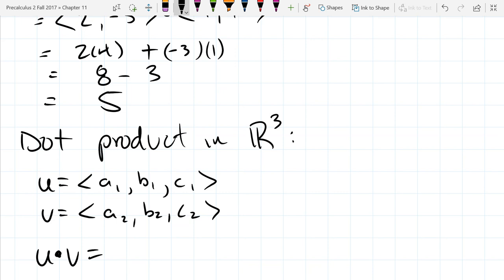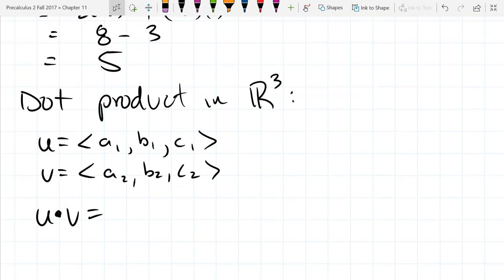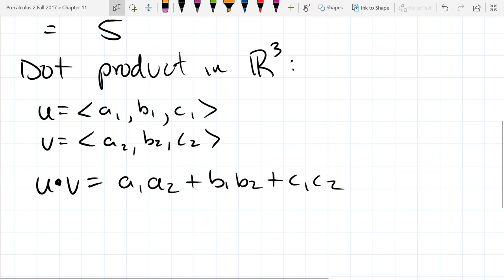And we dot them together, it's going to be exactly like it was before. You just get a1a2 plus b1b2 plus c1c2 at the end. So you're just multiplying coordinates together. So when you see what it looks like in three dimensions, you can probably imagine it in four dimensions. You just have to multiply the last two coordinates together and add them on. So dot product is easy to compute in any dimension.